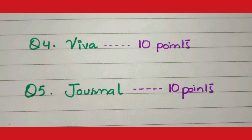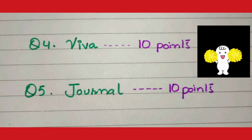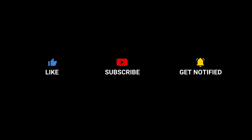Question number four is viva — it has 10 points, meaning one mark. Your external examiner will take your viva, and the majority of questions are from the dissection, so be well prepared for the system you are given. Question number five is the journal, which also has 10 points, meaning one mark. In this way, the 80 points are distributed among the five questions. If you have any query, write in the comment section below. Take care, Allah Hafiz.